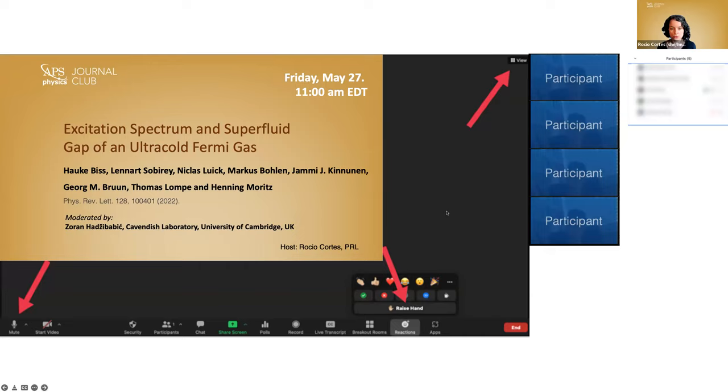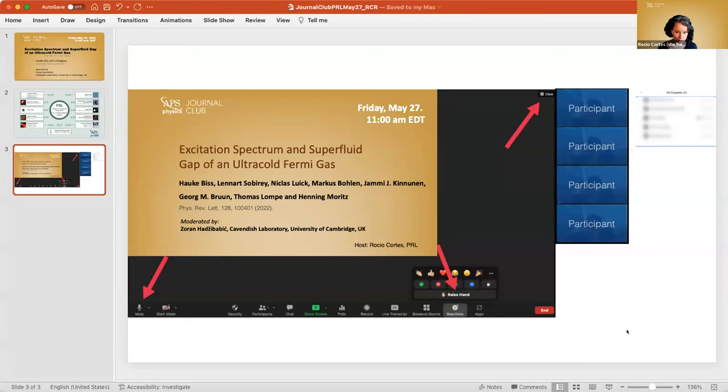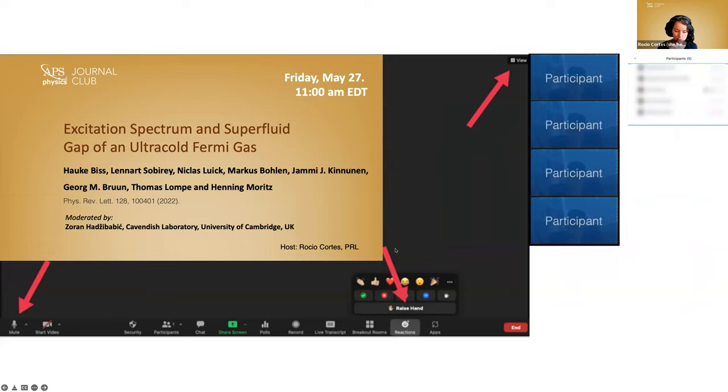I would like to introduce the moderator of today's Journal Club, Professor Zoran Hadzibabic, who is a professor in physics at the University of Cambridge and a fellow of the American Physical Society. His area of expertise is strongly interacting, low-dimensional, non-equilibrium Bose gases. Before starting his group at Cambridge University, he got his PhD at MIT and was a postdoc at the École Normale Supérieure in Paris.